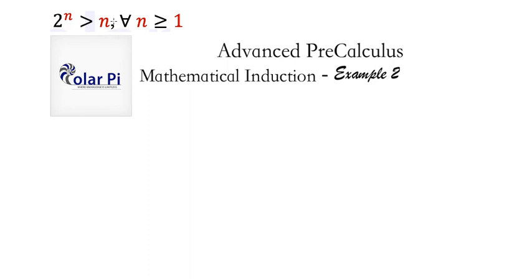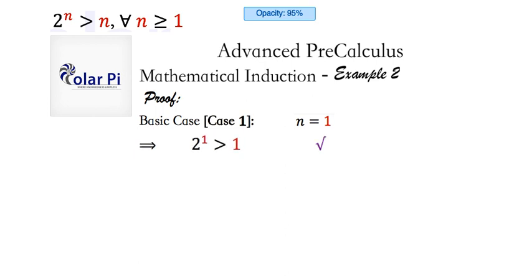So the question is, how do we prove this statement here? Because it's very different from example 1. Well, as usual, start with the basic case, case n equals 1. And in this case, we have to show that 2 to the first is greater than 1. And that's trivially true. Okay, cool.